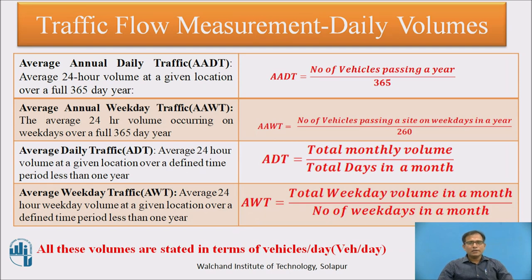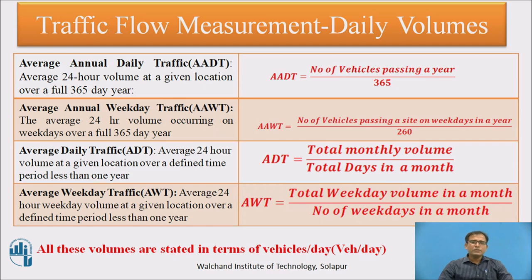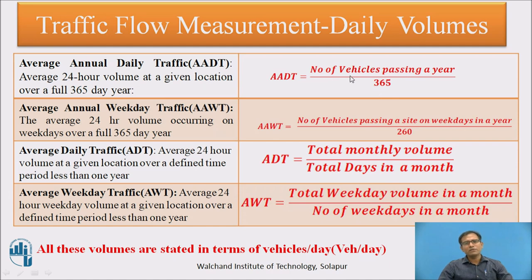Traffic flow is measured using daily volumes and hourly volumes. Daily volumes are expressed in different ways that consider variations within a year, month, week, and day. The first parameter is ADT — Average Annual Daily Traffic — which considers the total vehicles passing in a year divided by 365. This accounts for seasonal variations, such as lower traffic in the rainy season and higher traffic in summer.